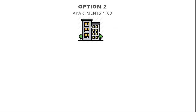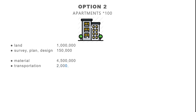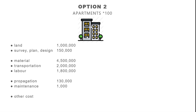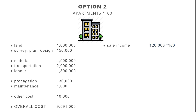For option two, we build apartments for 100 families. The land price is the same at €1 million, and surveying, planning, and designing fees are similar, giving a pre-construction phase total of €1.15 million. In the construction phase, costs are €4.5 million for materials, plus €2 million for transportation, plus €1.8 million for labor. Post-construction costs are the same as option one. Summing these up gives the total cost for option two. The average price per apartment is €120,000 — times 100 units gives the total benefit for option two.